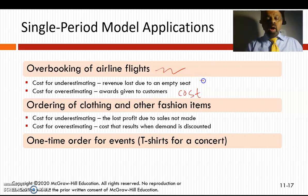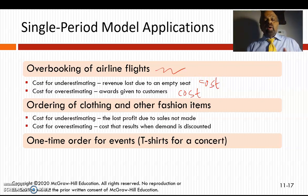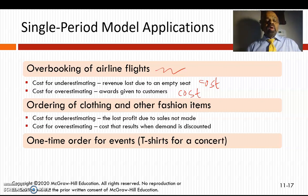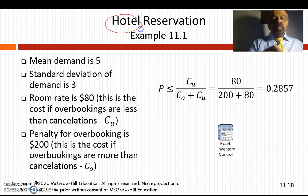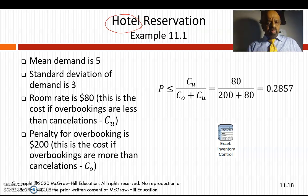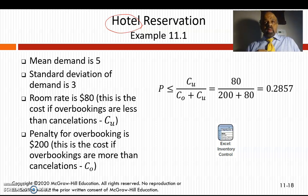If they underestimate, then there is an empty seat and revenue is lost — that's also a cost. Similarly, ordering of clothing or fashion items involves the same consideration of either underestimating or overestimating. Hotels have very similar problems to airlines; in fact, the travel industry broadly faces this issue of whether to overbook or underbook.